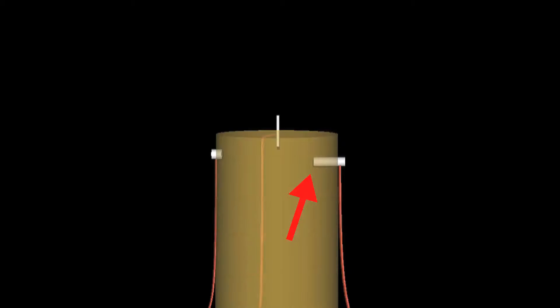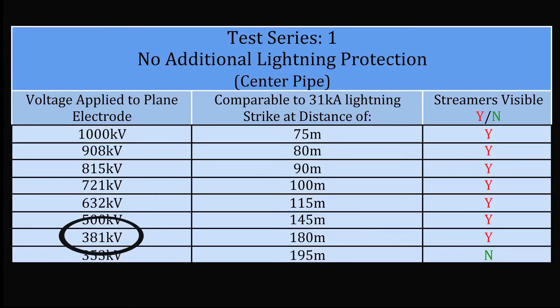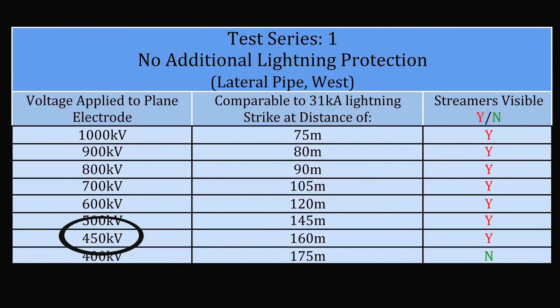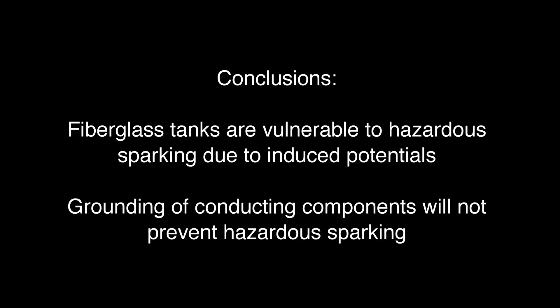The same sequence of tests was conducted on the two laterally inserted pipes with roughly the same results. Sparking continued down to an applied voltage of between 381 and 450 kilovolts. The following conclusions can be drawn from this first test series.